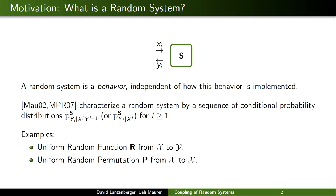A typical example of a random system is the uniform random function r from some domain x to codomain y. This is the random system that for every query x gives you an independent uniform random value from y, except that when you ask a query that you've asked before, you get back the same response.